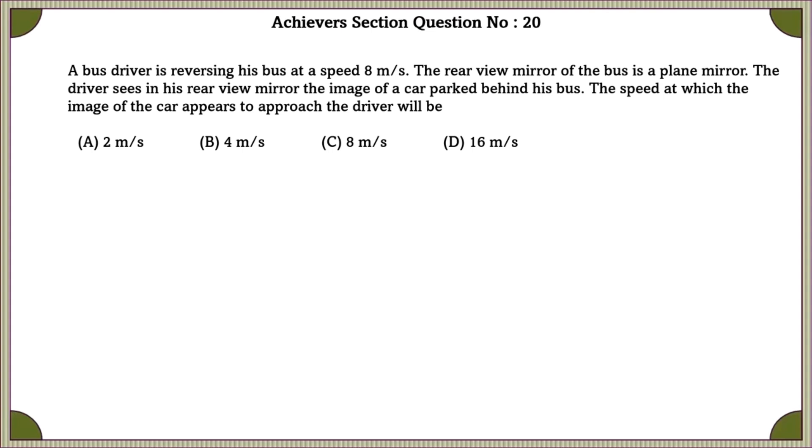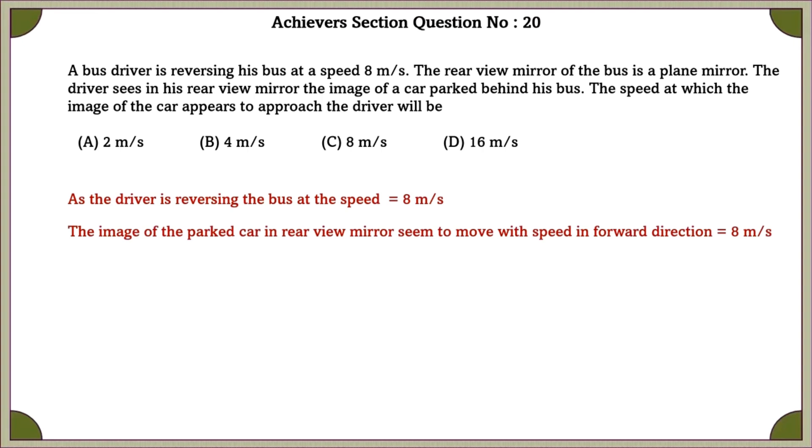Achievers section question number 20. A bus driver is reversing his bus at a speed of 8 meter per second. The rear view mirror of the bus is a plane mirror. The driver sees in his rear view mirror the image of a car parked behind his bus. The speed at which the image of the car appears to approach the driver will be. A bus driver is reversing his bus at a speed of 8 meter per second. The image of the parked car in rear view mirror seems to move with the speed in forward direction as 8 meters per second. Therefore, the net speed at which the image of the car appears to the driver is 8 minus of minus 8 is equal to 16 meter per second.